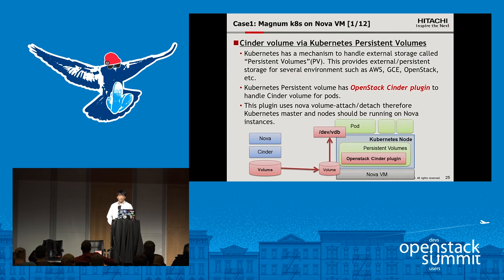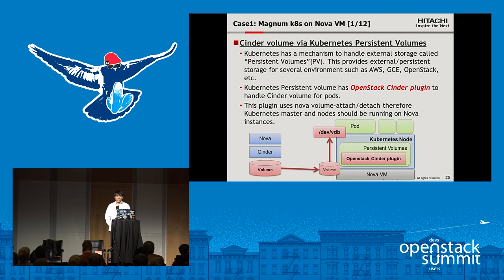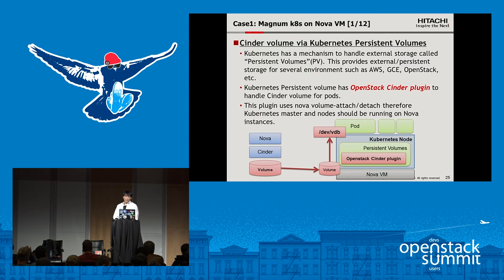Kubernetes has a mechanism to handle external storage called persistent volumes. This provides external persistent storage for several environments such as AWS, GCE, and OpenStack. The Kubernetes persistent volume has an OpenStack Cinder plugin to handle Cinder volumes for pods. This plugin uses Nova VM attach and detach functionality, so the Kubernetes master and nodes should be running on Nova instances. This figure shows a summary of the OpenStack Cinder plugin, where the Kubernetes node runs on a Nova VM.